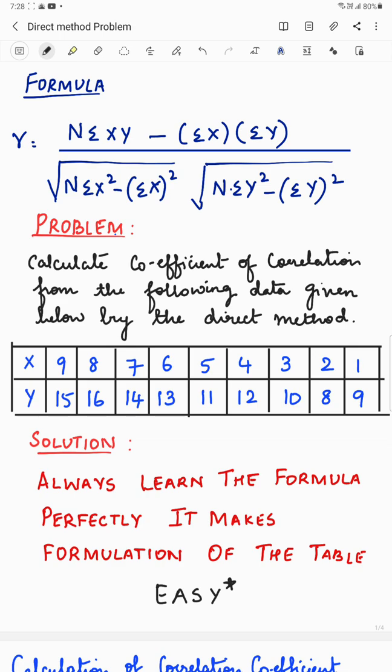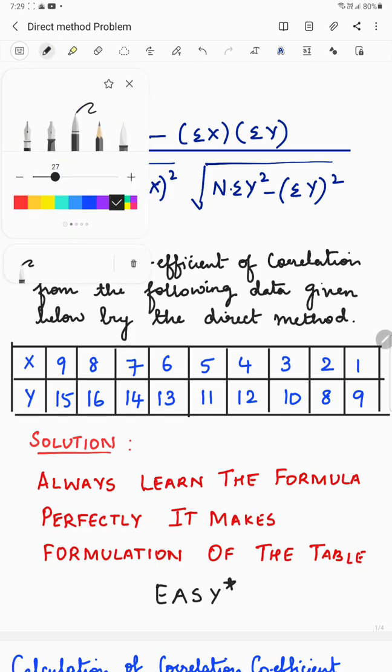It's always very important to learn the formula perfectly. Carl Pearson's coefficient of correlation, the direct method formula is given as you can see on the screen. Please learn the formula perfectly because once you learn the formula, formulation of the table will be very simple.